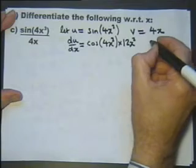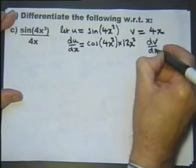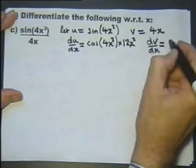Let's differentiate this with respect to x. So dv/dx equals—that'll just be differentiating that—we'll just get 4.